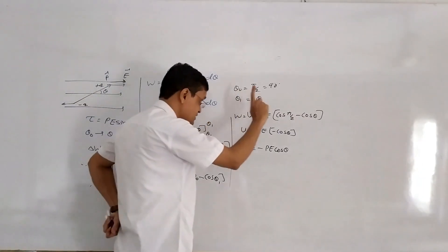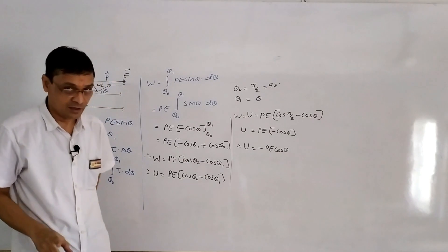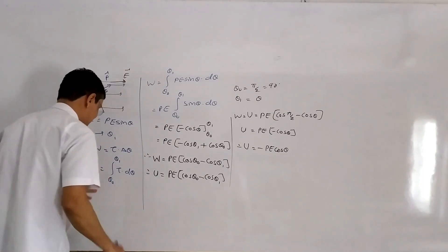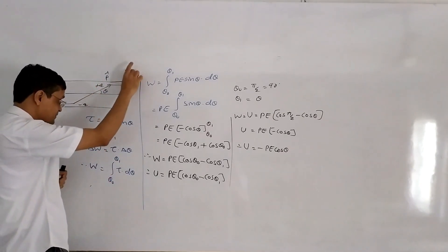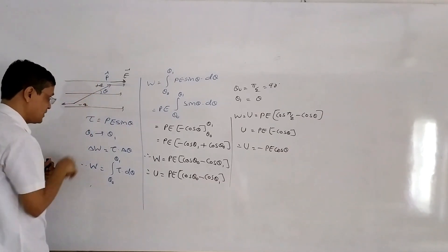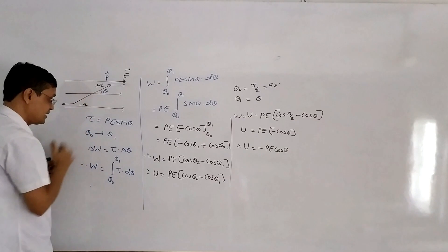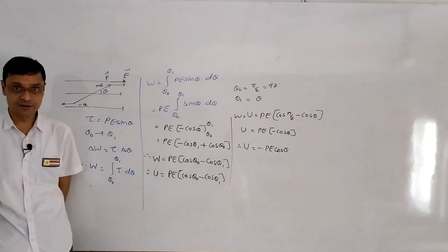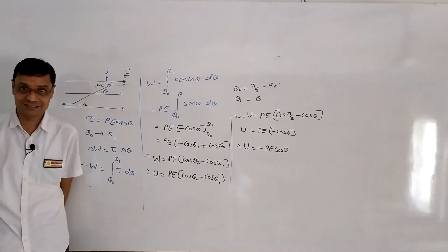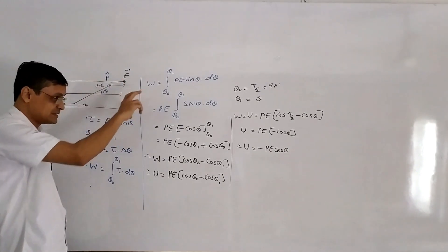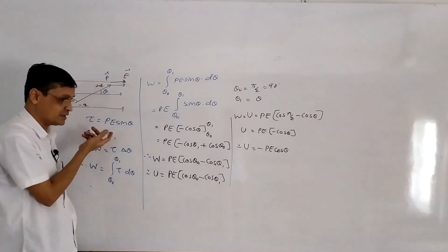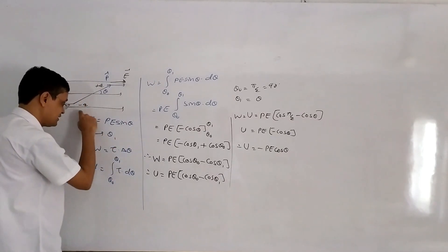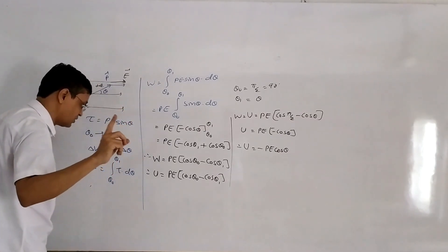To recap: a uniform electric field E is given, and an electric dipole is placed in it with negative and positive charges at angle theta. The force on the negative charge and positive charge are equal and opposite, so the resultant force is zero — meaning the dipole does not undergo linear motion but rotational motion. The torque formula is torque equals PE sin theta, from Chapter 1.